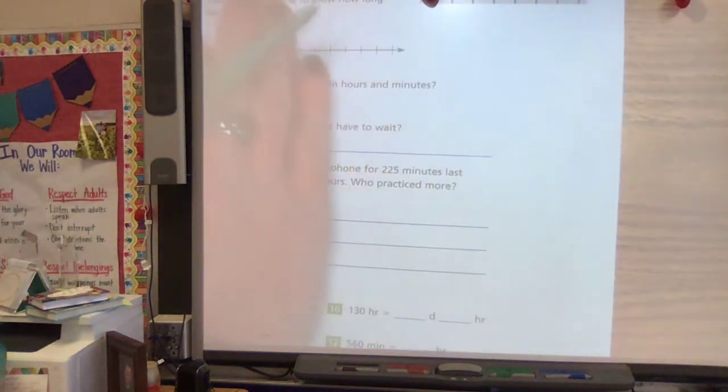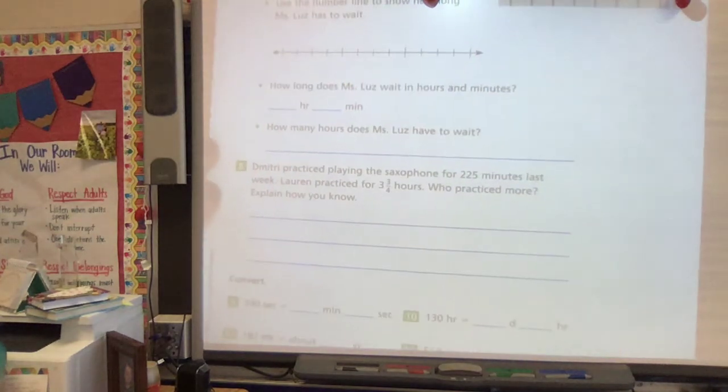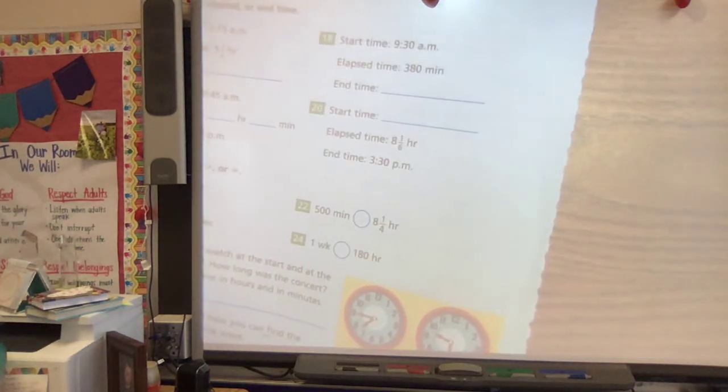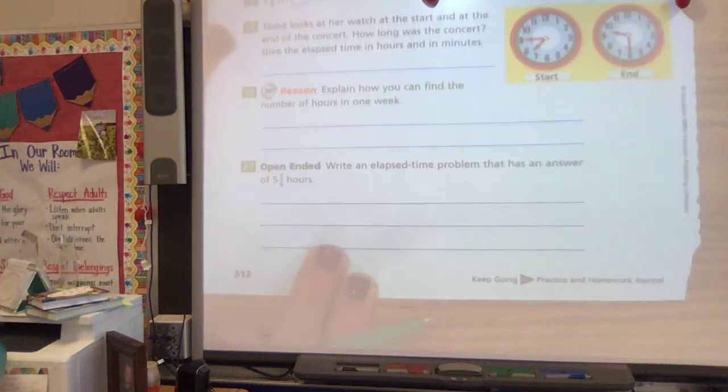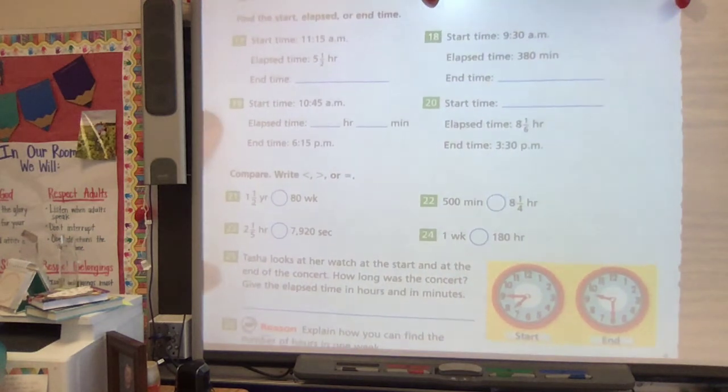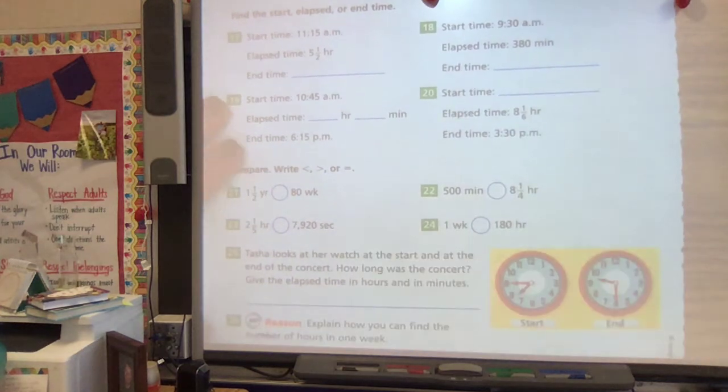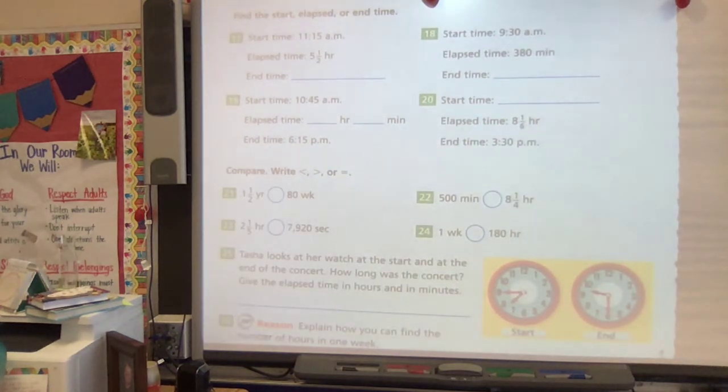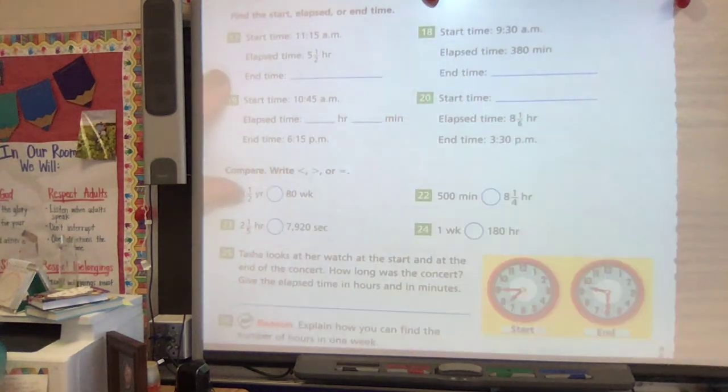So the rest of your work today is converting some of these things. Let's go ahead. Let's go to number 19. So we're on page 312. Let's turn or look at number 19 to talk a little bit about elapsed time. So remember that's start and end and how much time has gone by. So if we start at 11:15 and five and a half hours goes by, what's your end time going to be?